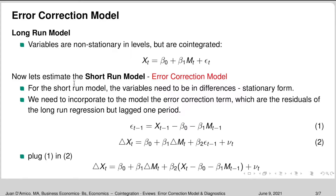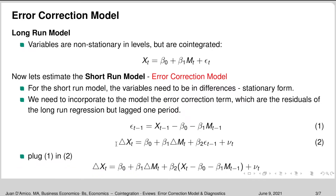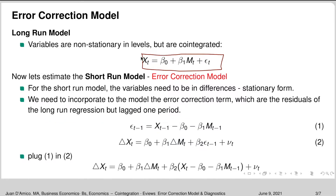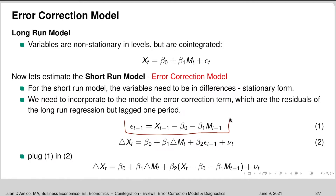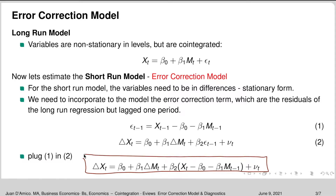This is the model we had estimated. Now we have to estimate the short-run model, which is the error correction model. In order to do so, the first thing we need is to have the variables in differences — their stationary form. In this equation, exports and imports are going to be in differences. We also need to incorporate the error correction term, which are the residuals of the long-run regression lagged one period. Plugging equation 1 (the lagged residuals) into equation 2 gives us the error correction model.